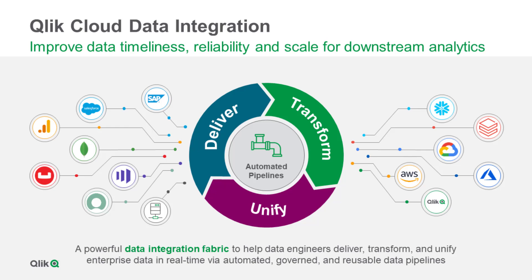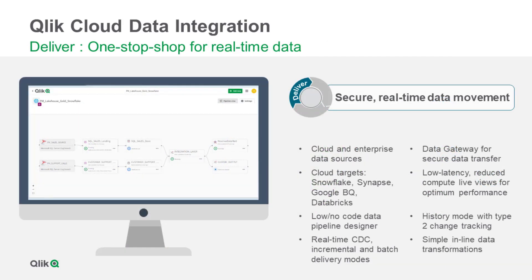Let's take a quick look at how we deliver, transform, and unify your enterprise data. The data movement capabilities are best-in-class for real-time data delivery. You can automatically replicate and continuously update cloud data platforms without manual coding or scripting. For example, you can quickly build a data pipeline to frequently send any changed data from multiple SAP systems and SaaS applications to the cloud data warehouse of your choice. You can also deliver data into Qlik Cloud for Analytics, Snowflake, Databricks, Azure Synapse, and Google BigQuery.